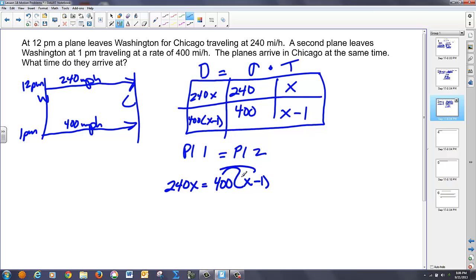I can distribute through. Get 400X minus 400 is equal to 240X. I want to get all the X's to one side of the equation, so I'll subtract 400X from both sides. That leaves me with negative 160X. And that's going to equal negative 400. So, next, I'll divide both sides by negative 160. If I take 400 divided by 160, I get 2.5.